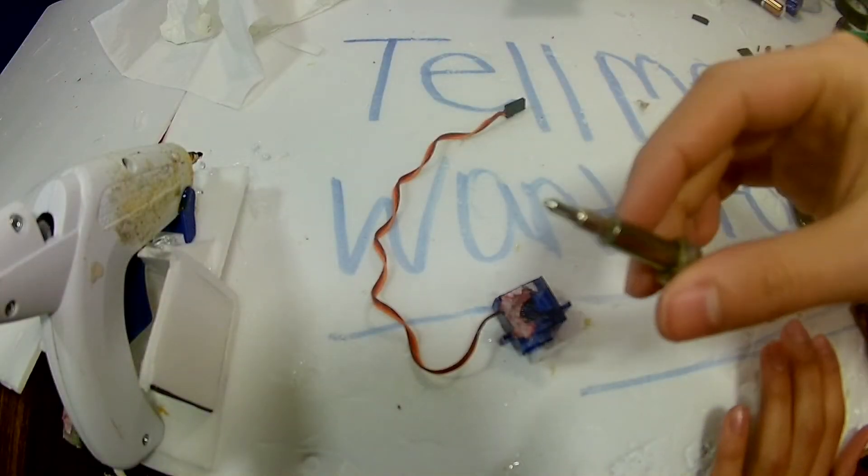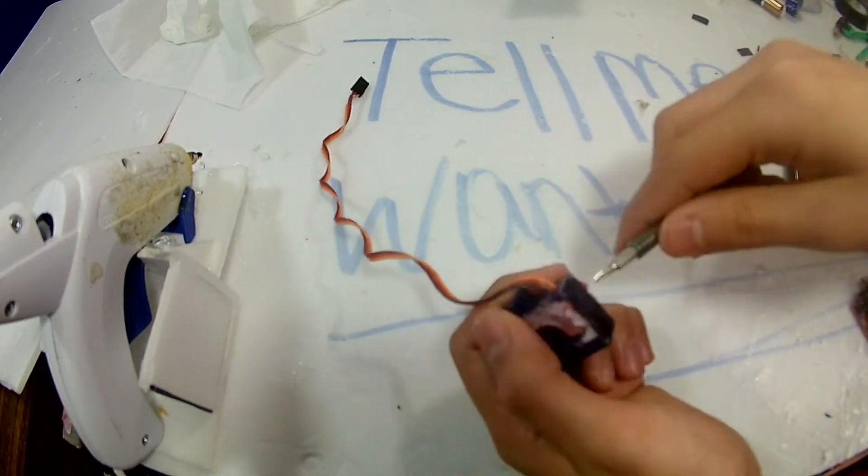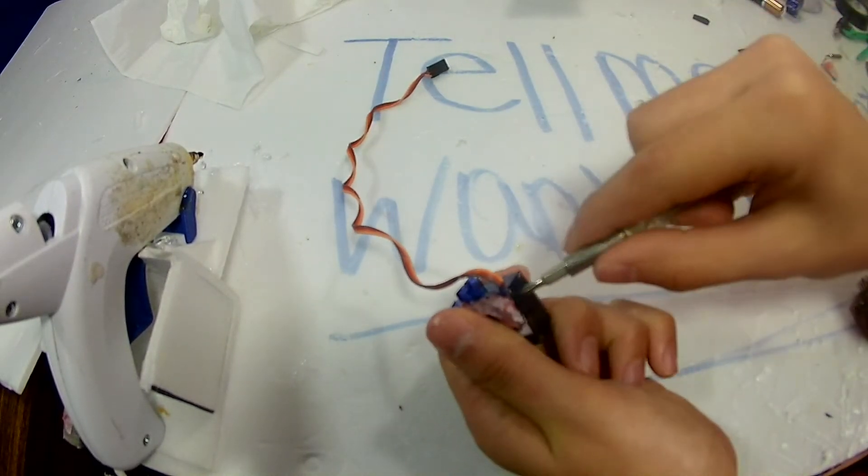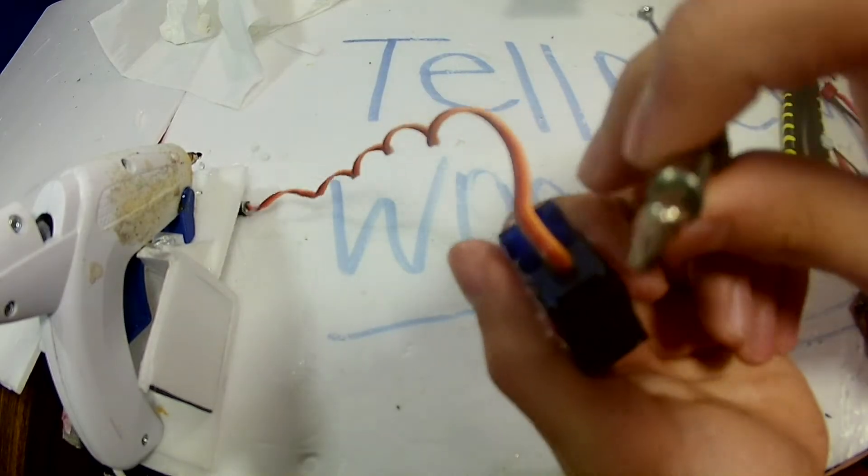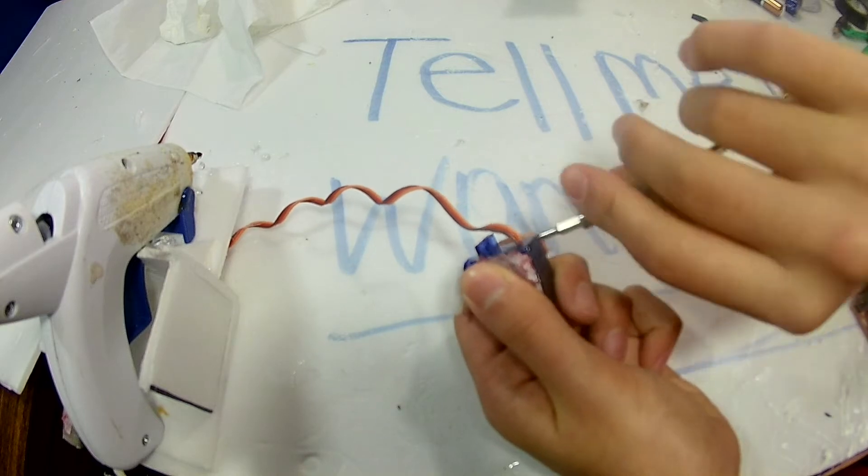First, get a small screwdriver—I forgot to tell you that. You're going to need it to open the case up. I'm using a Phillips head screwdriver, a small one, for the bottom four screws.